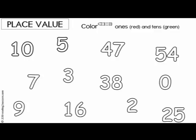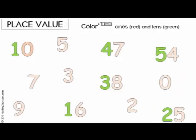Now that kids have been introduced to two-digit numbers and practiced place value, have them color the digit in each number that represents the ones red, and the digits that represent tens green. In a completed example, bring attention to kids that some numbers only have one digit that represents the value of the ones.